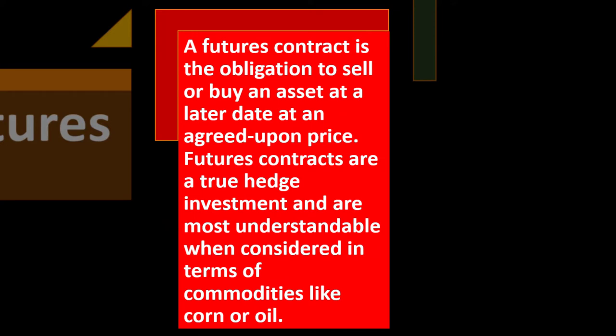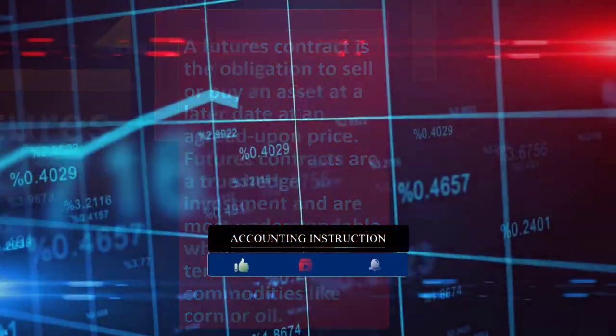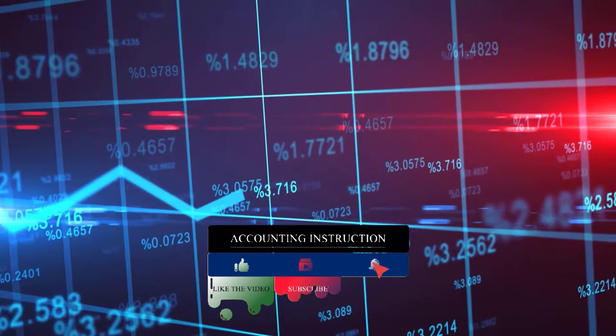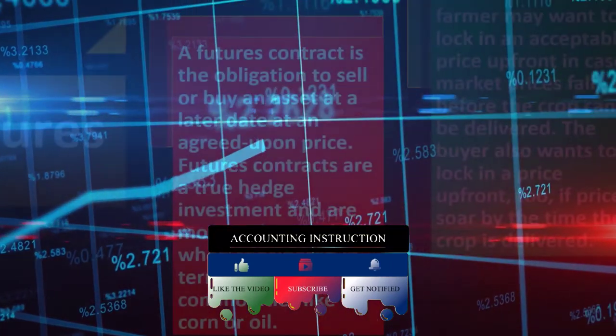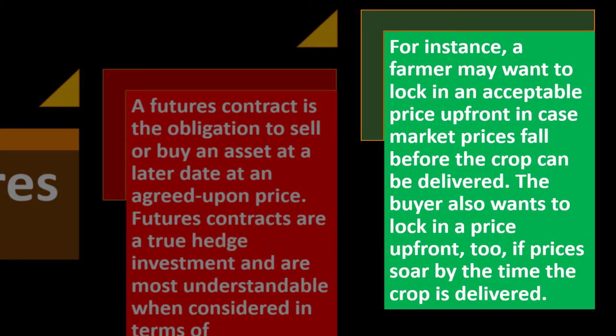A futures contract is the obligation to sell or buy an asset at a later date at an agreed-upon price. Futures contracts are true hedge investments and are most understandable when considered in terms of commodities like corn or oil. For instance, a farmer may want to lock in an acceptable price upfront in case market prices fall before the crop can be delivered.